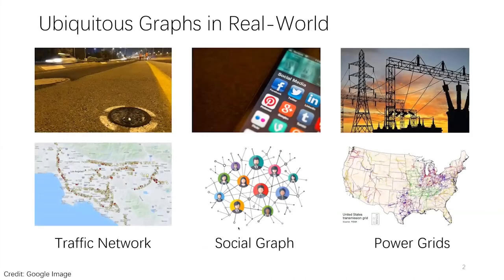Graphs are ubiquitous in the real world since they provide an effective structural representation to organize and manage relational data. Typical graphs at the network edge include traffic sensory networks, social graphs, and power grids. For instance, a traffic sensory network can be regarded as a spatial-temporal graph. Its vertices are roadside detectors and the connections are roads. Each vertex can attach a time-varying vector that records immediate properties like traffic speed and occupancy.